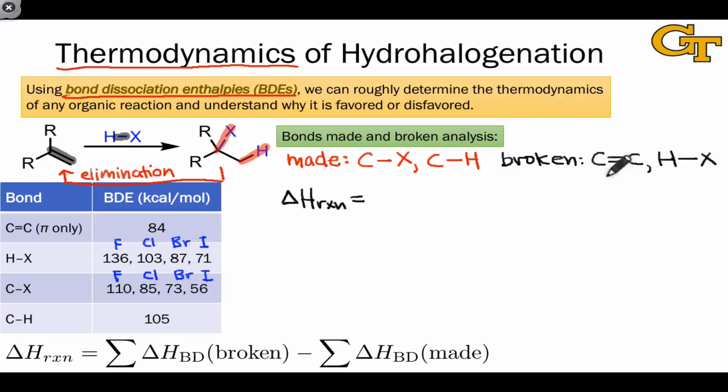Adding things up here, we find that the bonds broken are the C=C pi bond, which is 84 kcal/mol, and the HX bond, which for, let's say, chlorine is 103 kcal/mol. The bonds made include CX, which for chlorine is 85 kcal/mol, and the CH bond, which is 105 kcal/mol. What we find when we add all these numbers up, and again, this is for hydrohalogenation involving HCl, is that the reaction overall is only negative 3 kcal/mol in enthalpy. So this is almost thermoneutral.